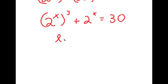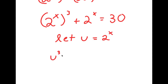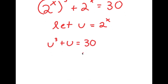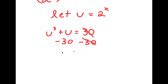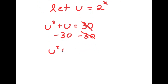Now I'm going to let the variable u equal 2 to the power of x. So if I substitute in u for 2 to the power of x, I get u to the power of 3 plus u is equal to 30. I can subtract 30 on both sides, so I get u to the power of 3 plus u minus 30 is equal to 0.